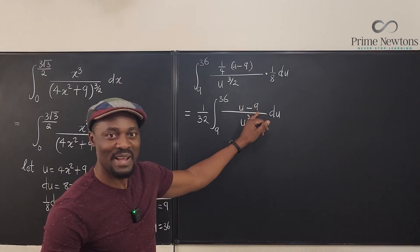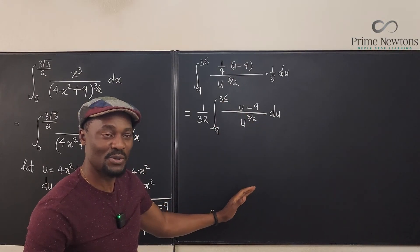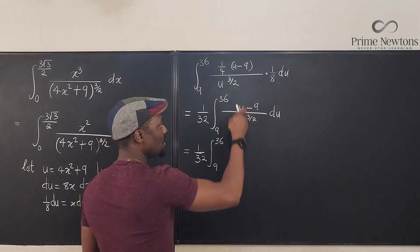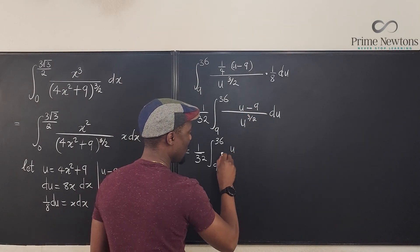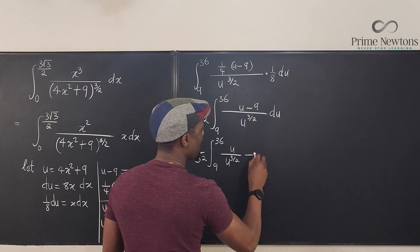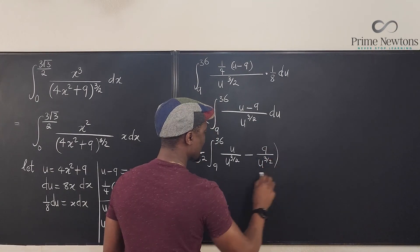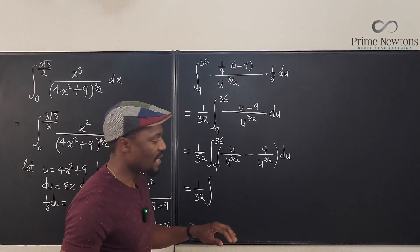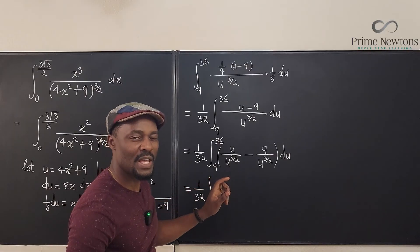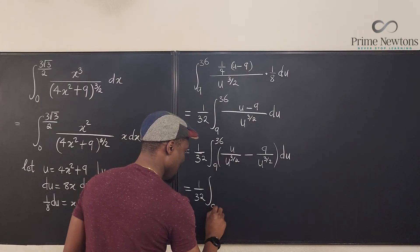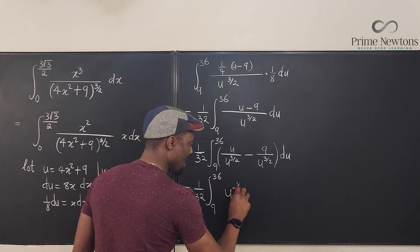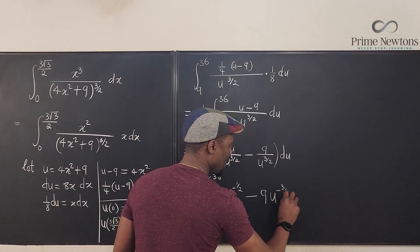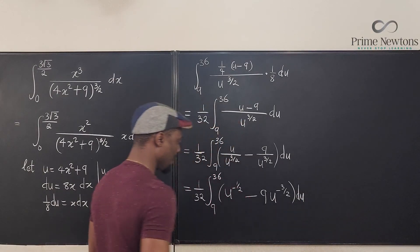This looks very nice at this point — it's just arithmetic. I can split this into two integrals: (1/32) times the integral from 9 to 36 of [u/u^(3/2) − 9/u^(3/2)] du. Applying the laws of exponents, u/u^(3/2) = u^(1 − 3/2) = u^(−1/2), and 9/u^(3/2) = 9u^(−3/2). So this becomes (1/32) ∫₉³⁶ [u^(−1/2) − 9u^(−3/2)] du.